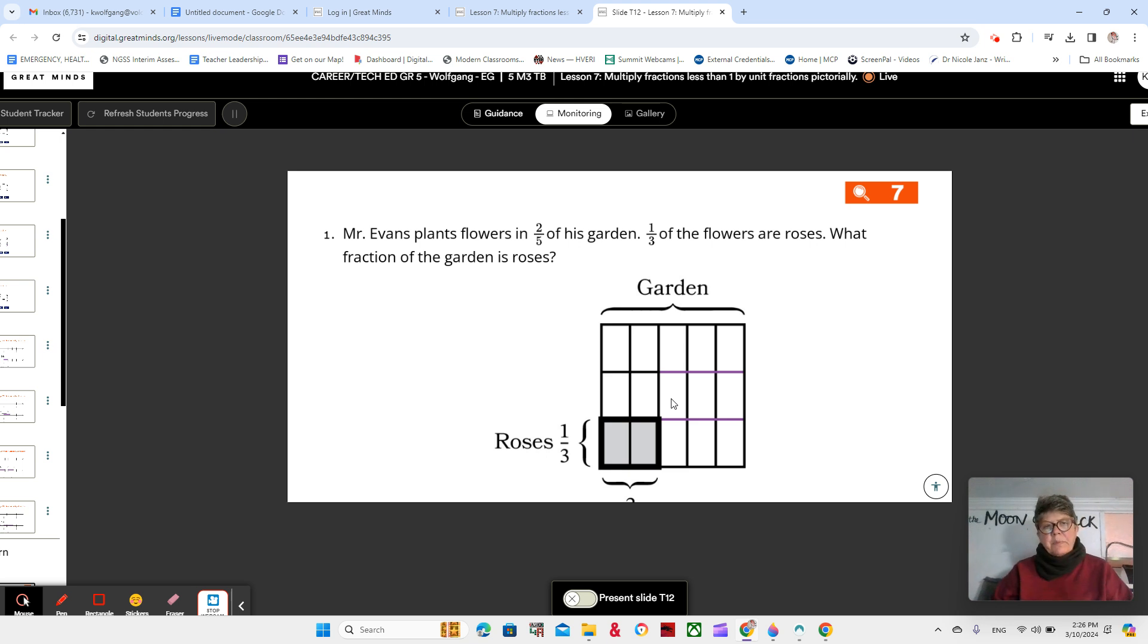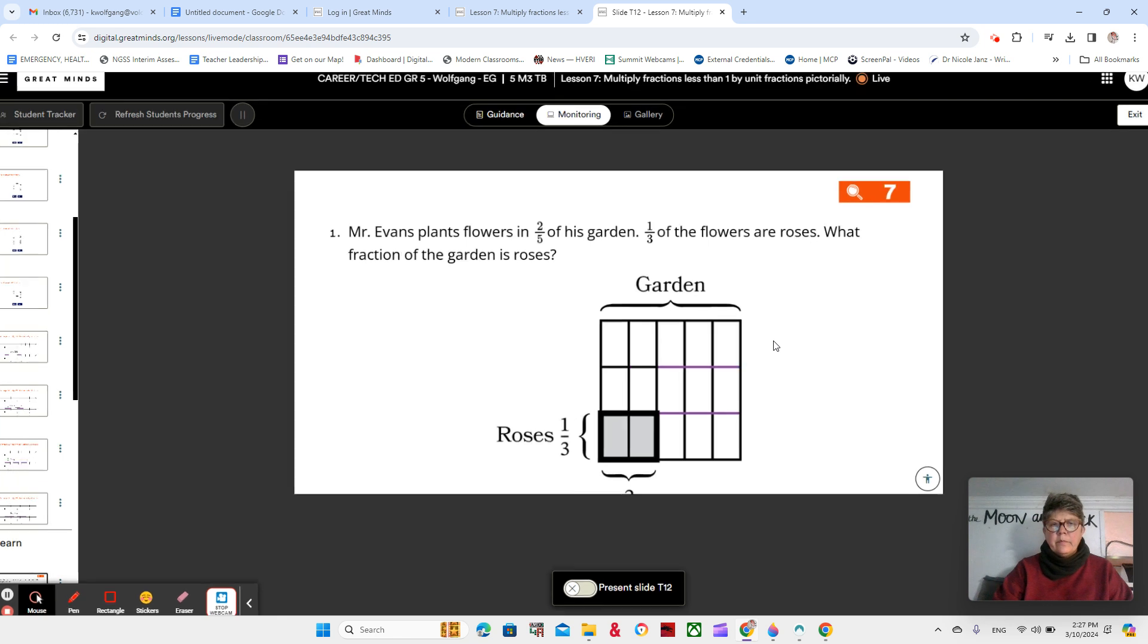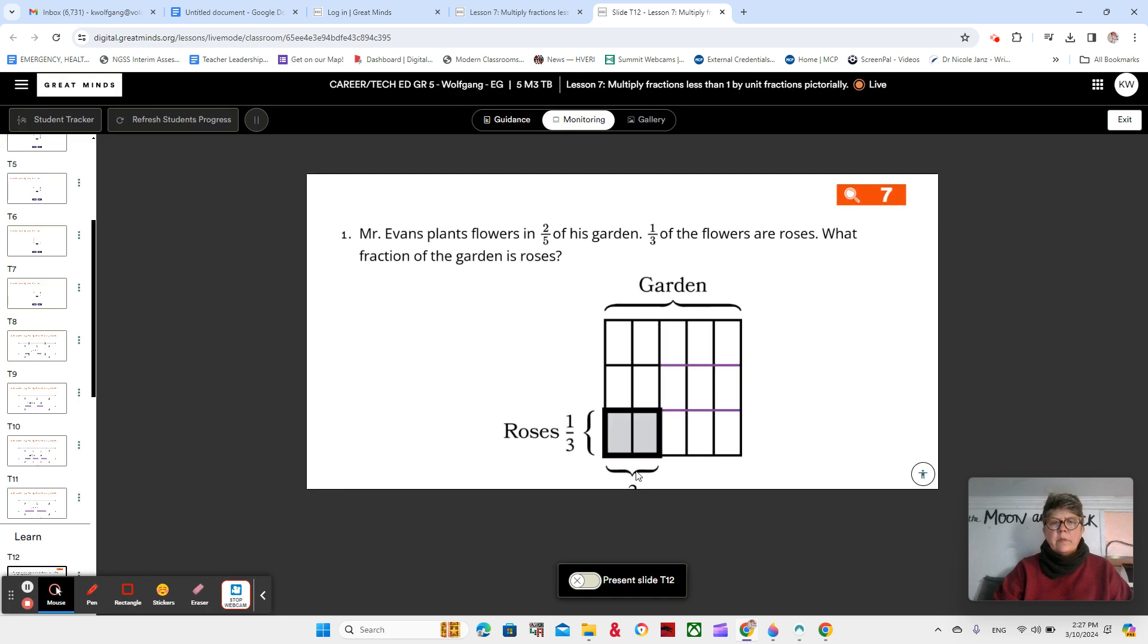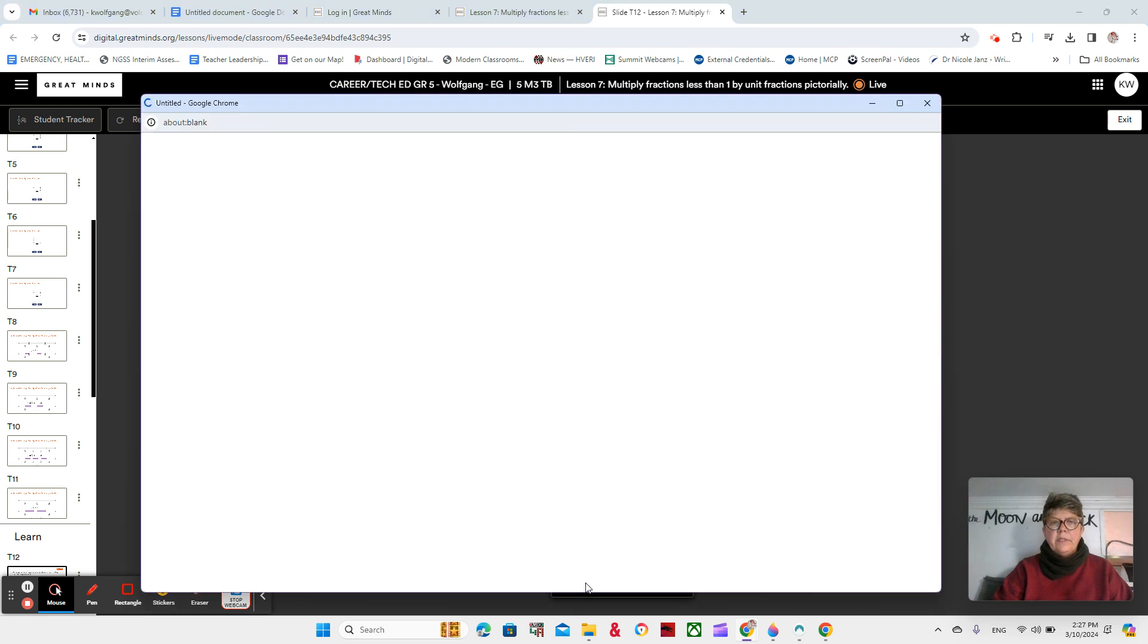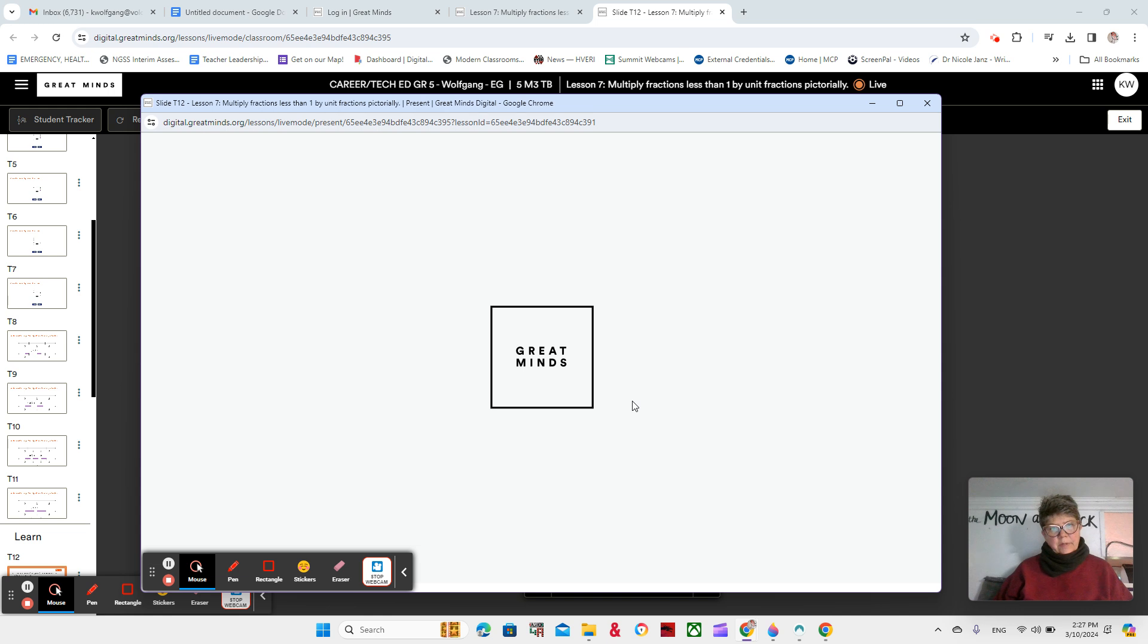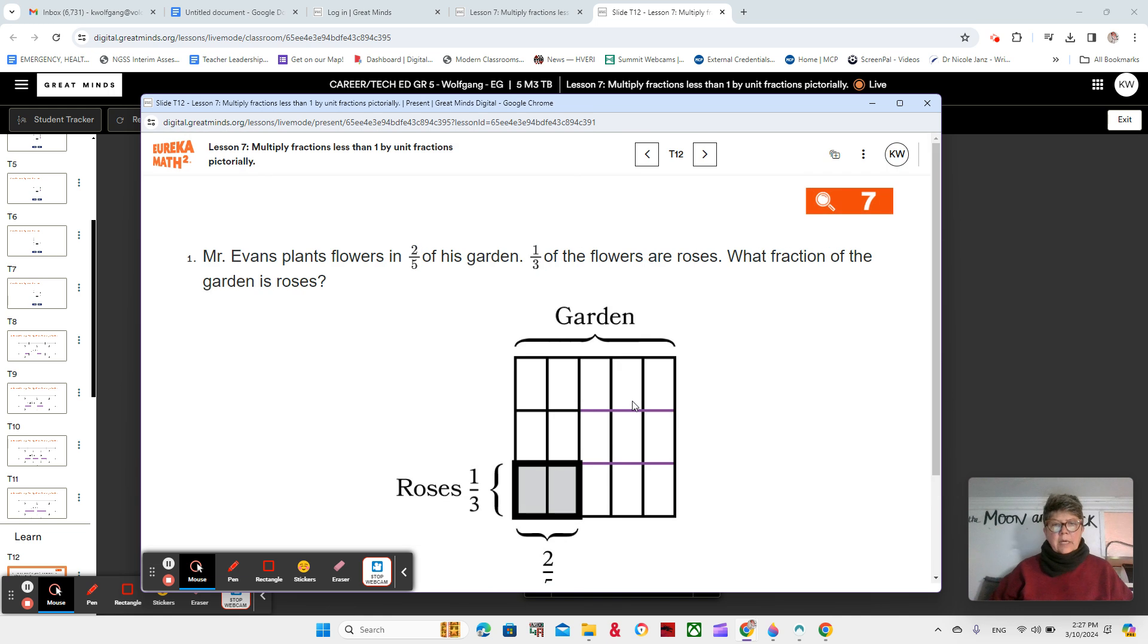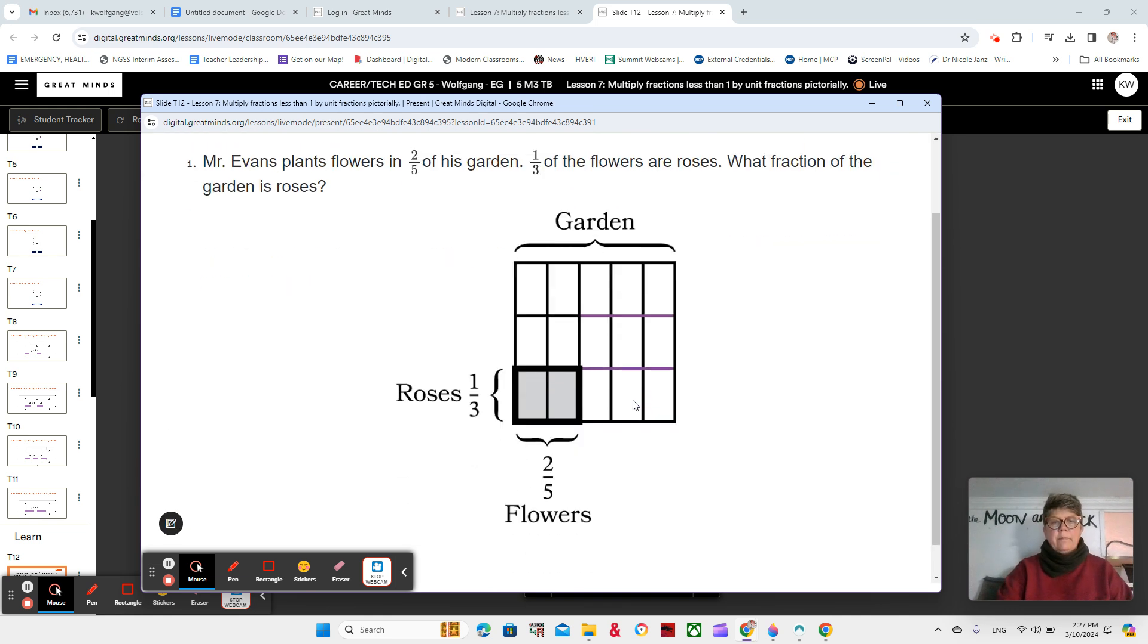Mr. Evans plants flowers in 2 fifths of his garden. One third of the flowers are roses. What fraction of the garden is roses? So, we have a whole area model here that shows the garden. There's something missing down here that I wish I could. There we go. We'll make it bigger. Okay. And so, the area model shows the garden.